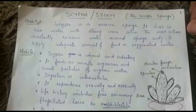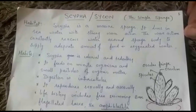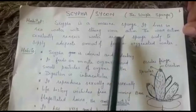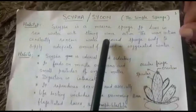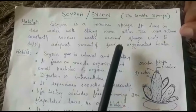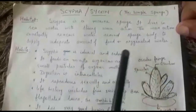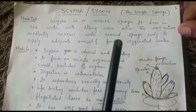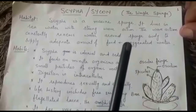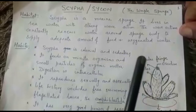Today we will take up Scypha, also known as Sycon, which is also known as simple sponge Scypha. It lives in sea water and prefers water with strong wave action, because wave action will constantly renew water around the sponge body. Since Scypha is fixed, wave action ensures the water around it remains clean and constantly replaced.